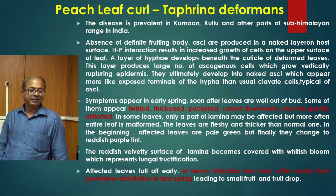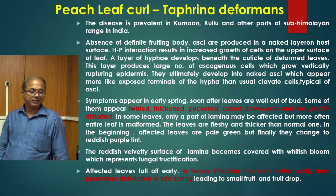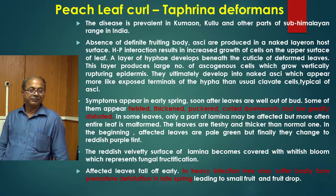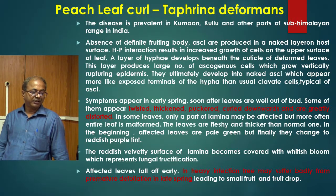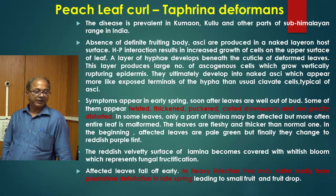Taphrina produces naked ascospores with an absence of definite fruiting bodies. The ascospores are produced in a naked layer on host surface. Host-pathogen interaction results in increased growth of cells on the upper surface of the leaf. A layer of hyphae develops beneath the cuticle of deformed leaves, producing ascogenous cells that grow vertically, rupturing the epidermis and ultimately developing into naked asci. Symptoms appear early in spring, soon after leaves emerge from buds. Some leaves appear twisted, thickened, puckered, curled downward, and greatly distorted.